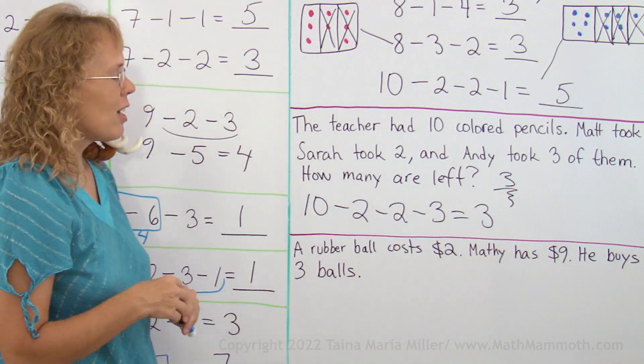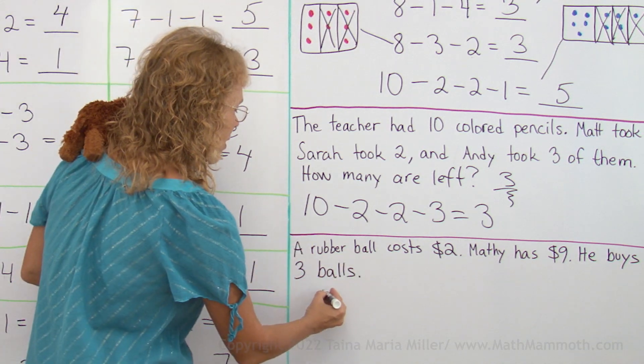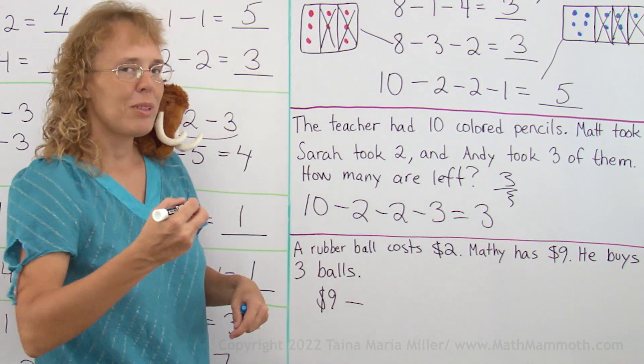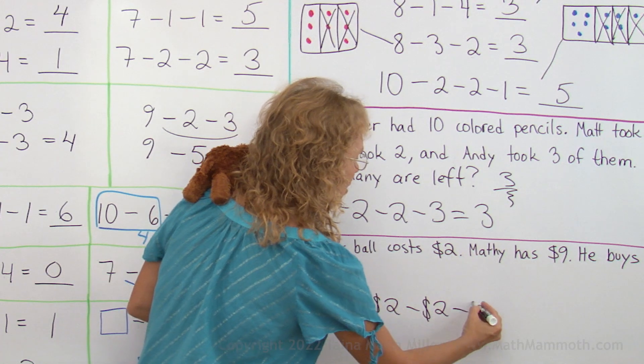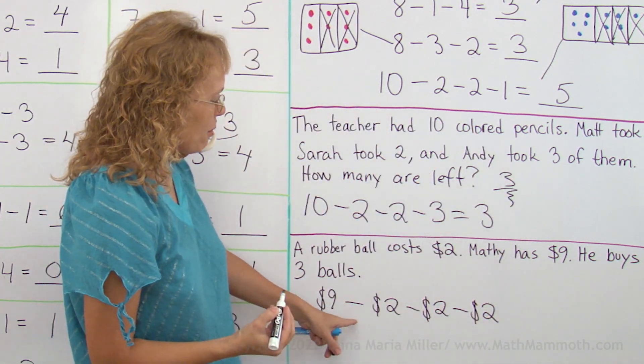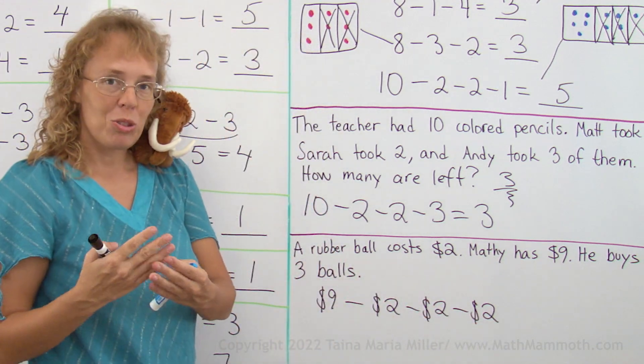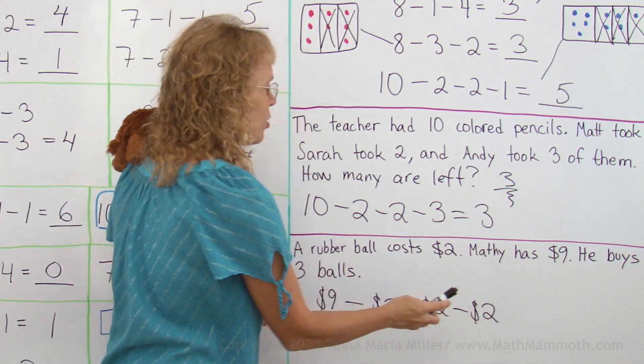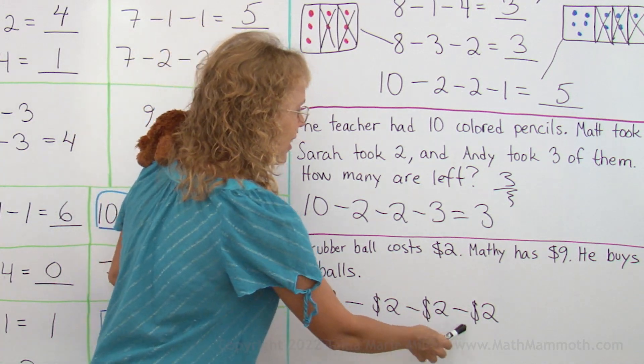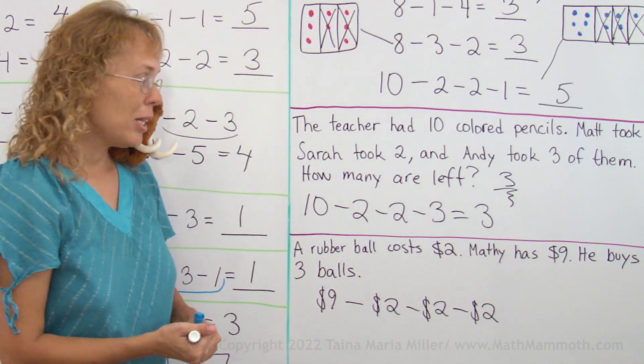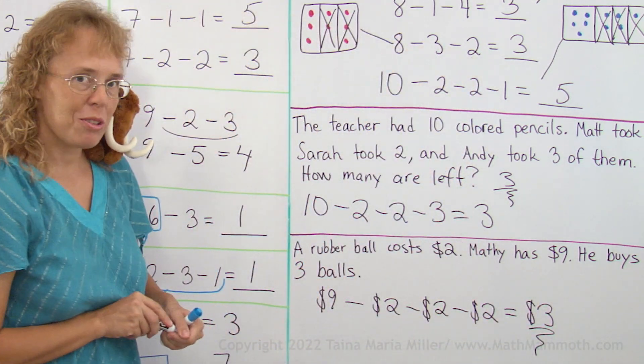So let's say we solve how much money Matthew will have left. Matthew would have $9, and then he buys. So money goes away from him, right? He buys one ball, and another, and another. Again, we can solve this by first adding these, adding how much money those 3 balls cost, right? And 2 and 2 and 2 makes a total of $6, and then 9 take away 6 would be $3. Matthew has $3 left if he buys those 3 rubber balls.